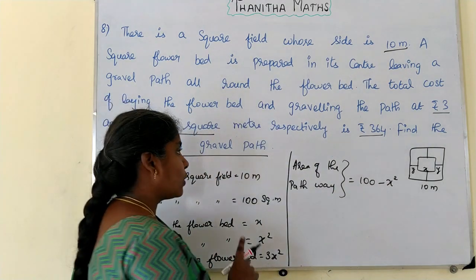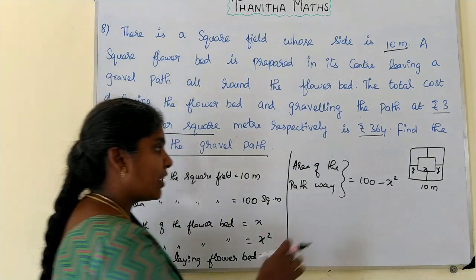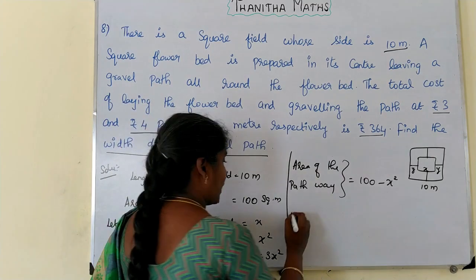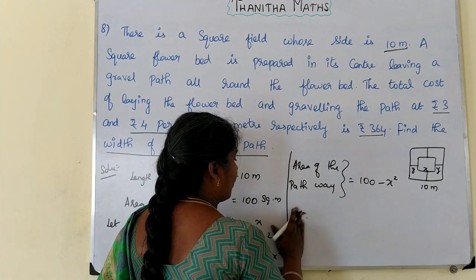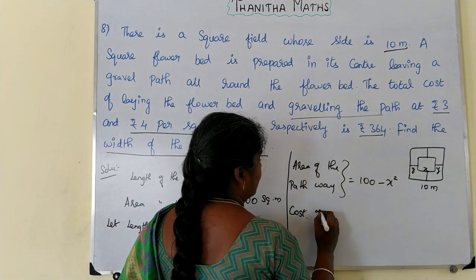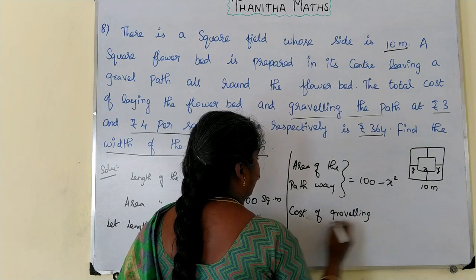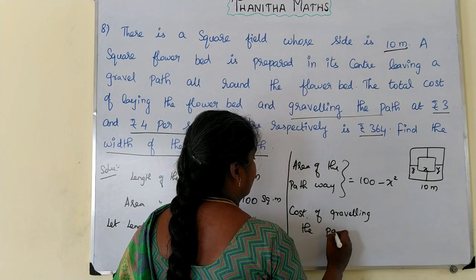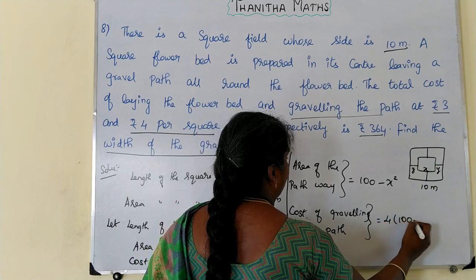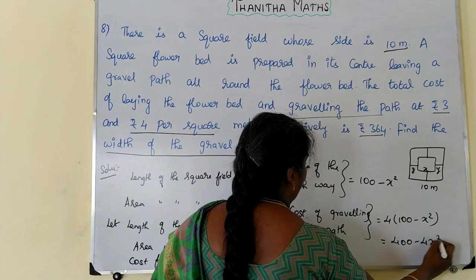Since 1 square meter of pathway costs 4 rupees, the cost of graveling the path is equal to 4 into (100 minus x squared), which equals 400 minus 4x squared.